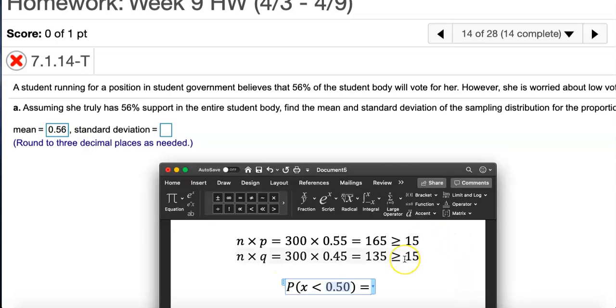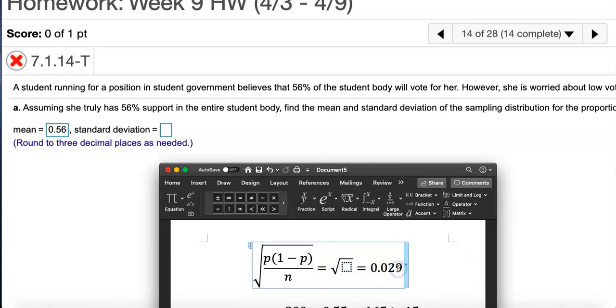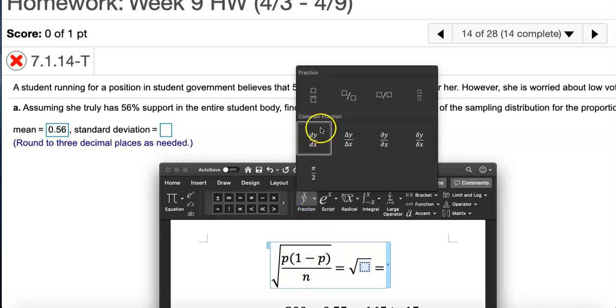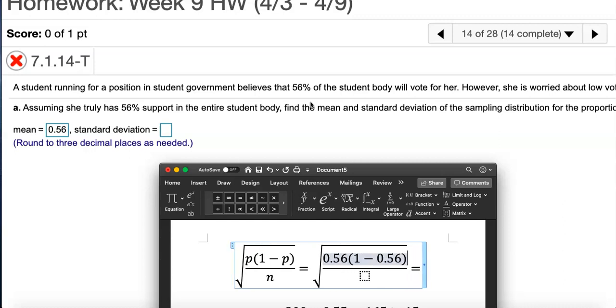Standard deviation, this one though we have to use a formula. I've been doing some work on the side to do this standard deviation. Here's the formula for you: square root of P times one minus P divided by n.